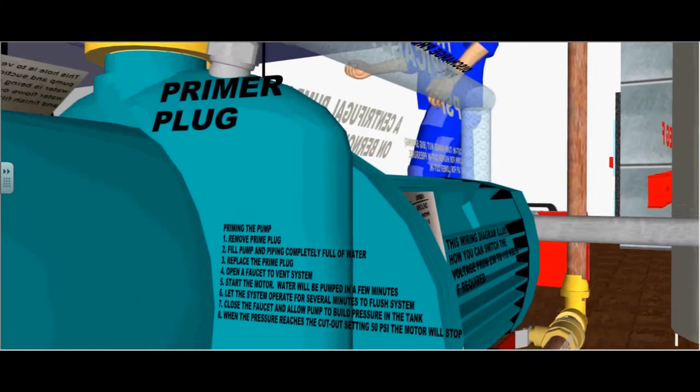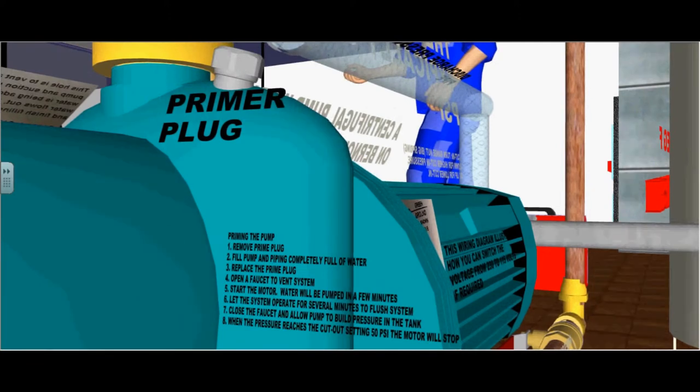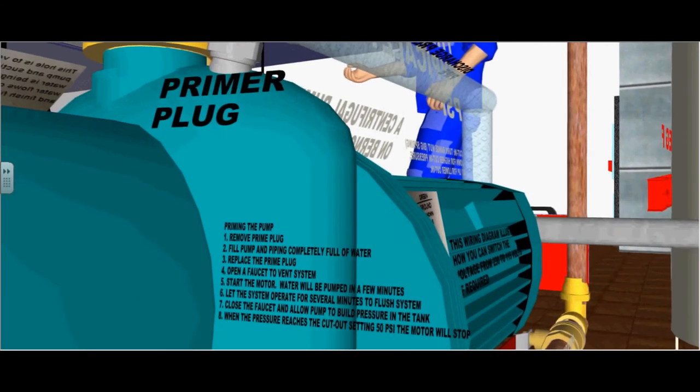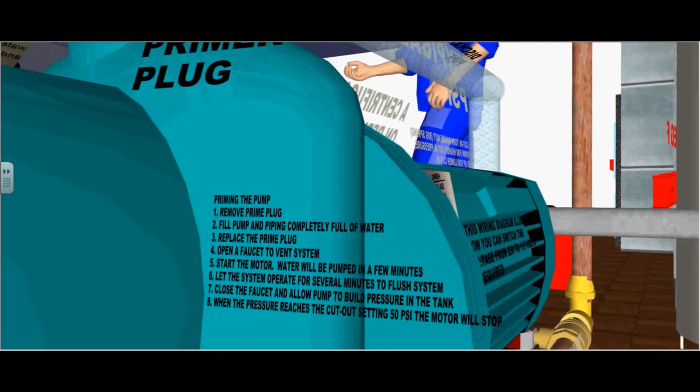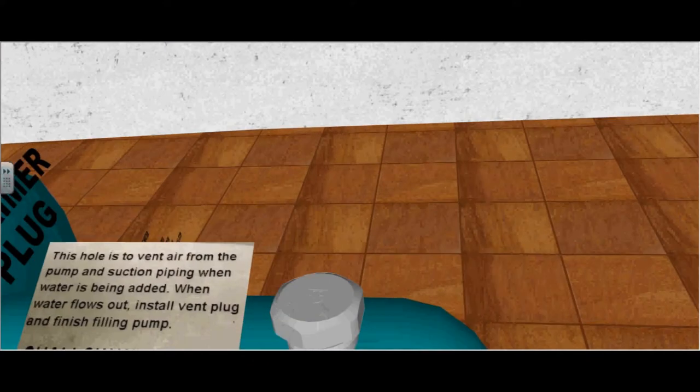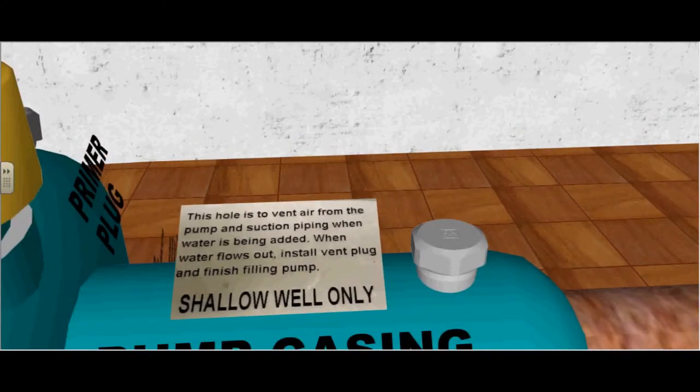Close the faucet and allow the pump to build up pressure in the tank. When the pressure reaches the cutout switch or cutout setting of 50 psi, the motor will stop. This hole is to vent air from the pump and suction piping when water is being added. When water flows out, install a vent plug and finish filling the pump.